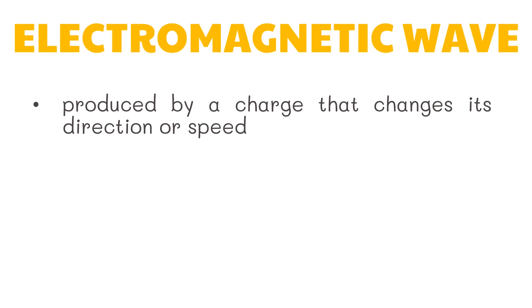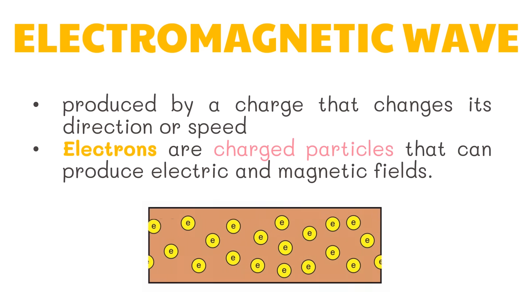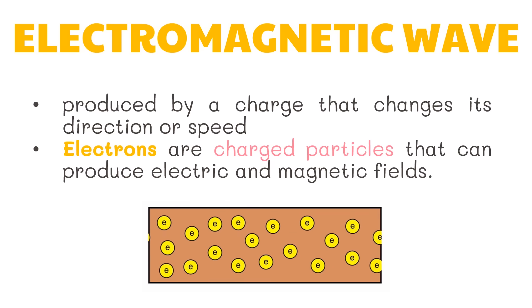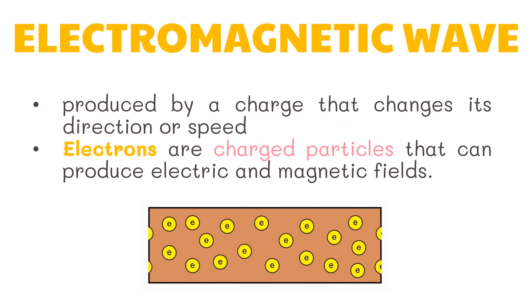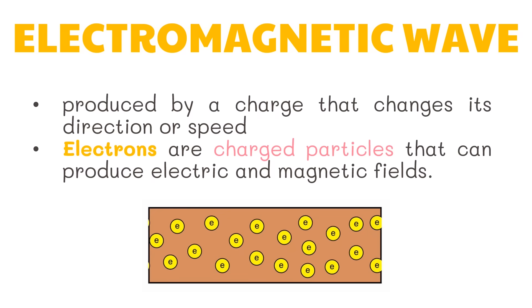Electromagnetic waves are produced by a charge that changes its direction or speed. Electrons are charged particles that can produce electric and magnetic fields, but in order to create vibrating electric and magnetic fields, electrons must move. A charged particle, such as an electron, moves back and forth or vibrates. A changing magnetic field produces an electric field, and in the same manner, a changing electric field produces a magnetic field.